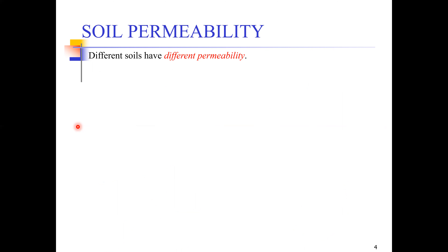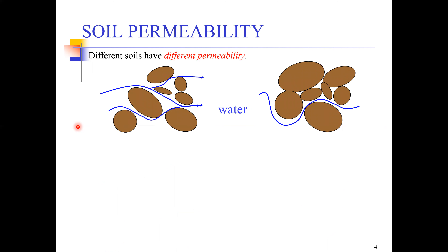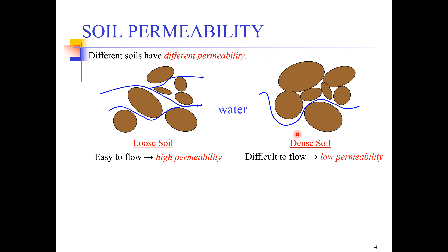Different soils have different permeability. A loose soil, as you can see on the left side of the screen, has large pores, and because of those large pores it is easier for water to flow through it. A dense soil, shown on the right side, has very closely bounded, smaller pores, making it difficult for water to flow through. Because of this, the dense soil is going to have low permeability compared to loose soil, which is going to have high permeability.